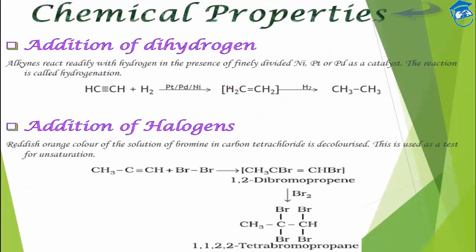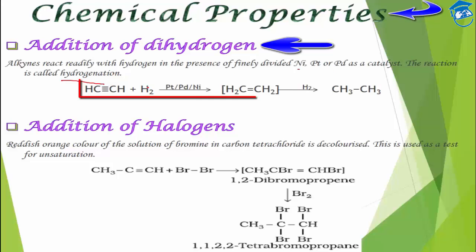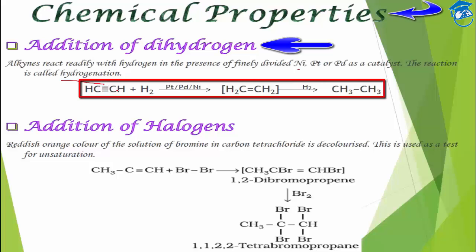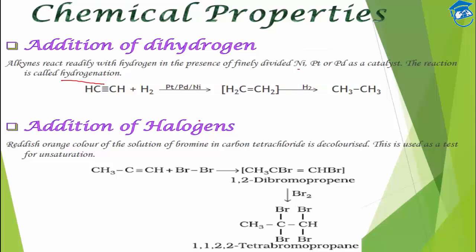Next, chemical properties. First is addition of dihydrogen: alkynes can be reduced with hydrogen in the presence of a catalyst such as finely divided nickel, palladium, or platinum. This reaction is known as hydrogenation. First the alkyne converts into an alkene, and then further into an alkane.